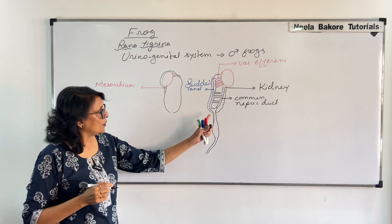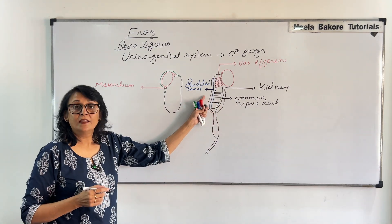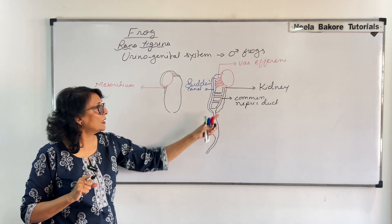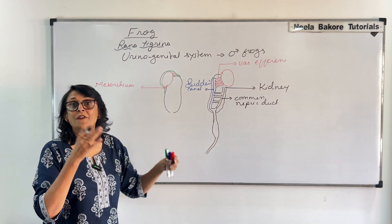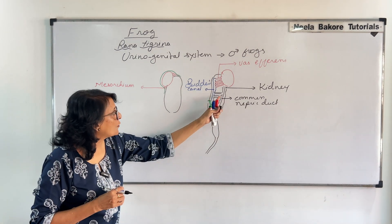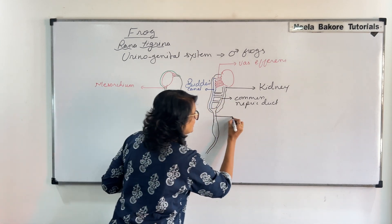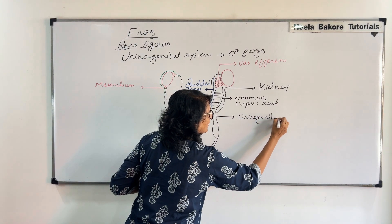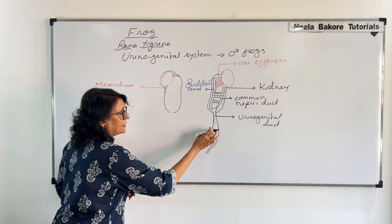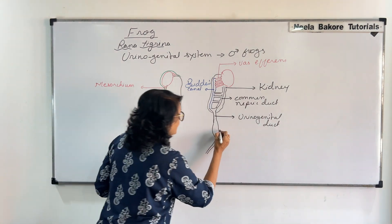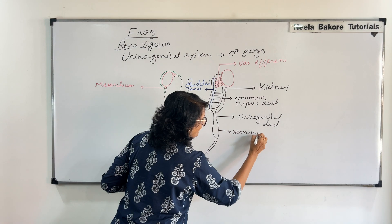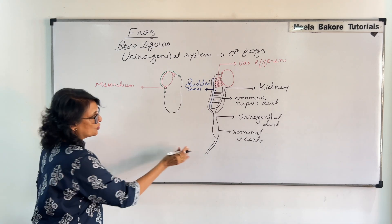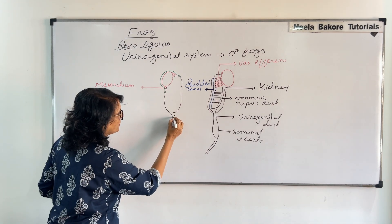In the common tube, the sperms are also coming from the testes into Bidder's canal and then into this common duct. And this duct receives the filtrate from the nephron, so from here is going to be the urine. This common duct is the urinogenital duct. There is a swelling here — these are called the seminal vesicles. And again this common duct: one is coming from here, the other one will be coming from here.